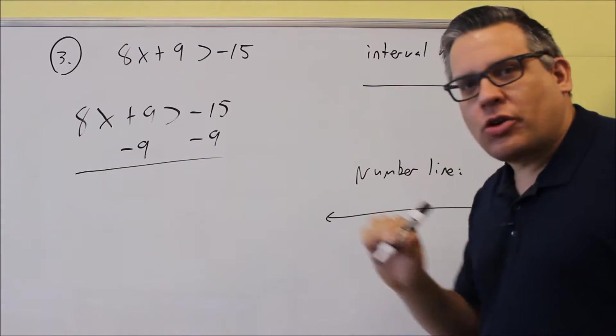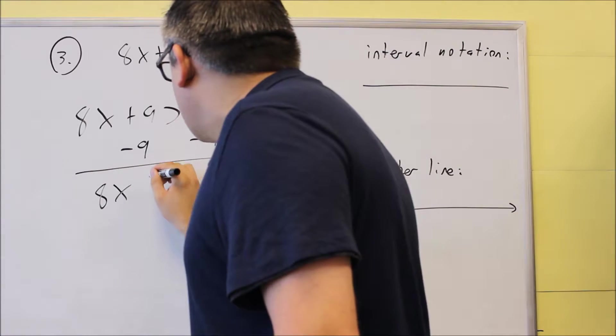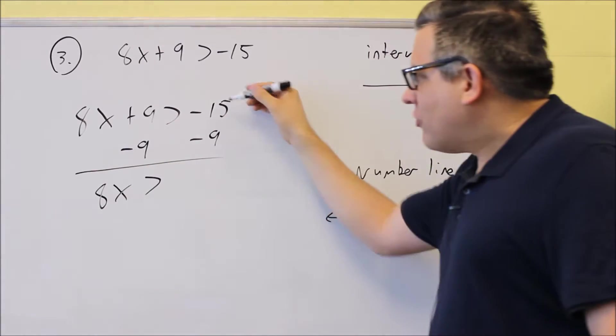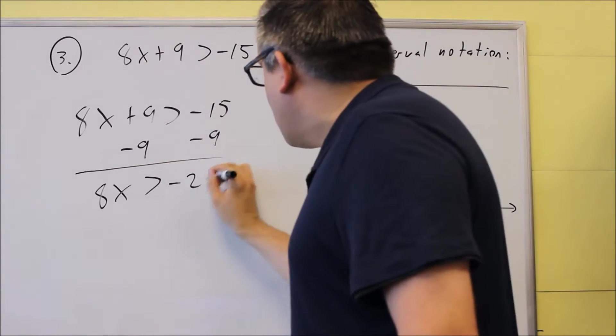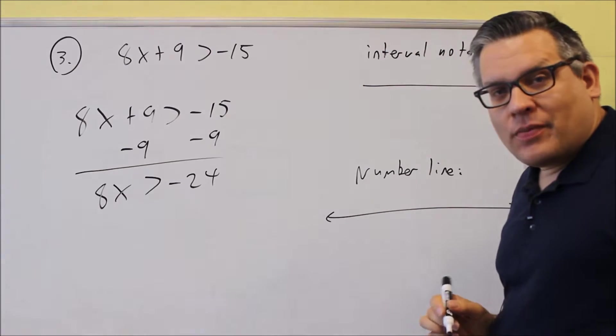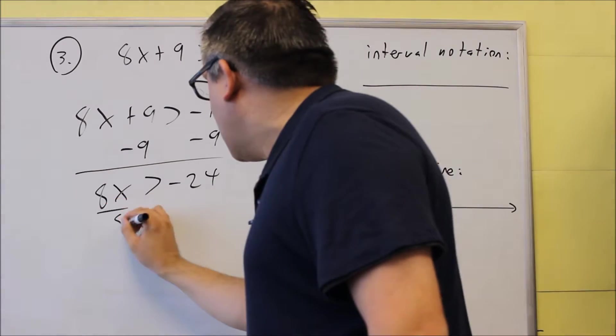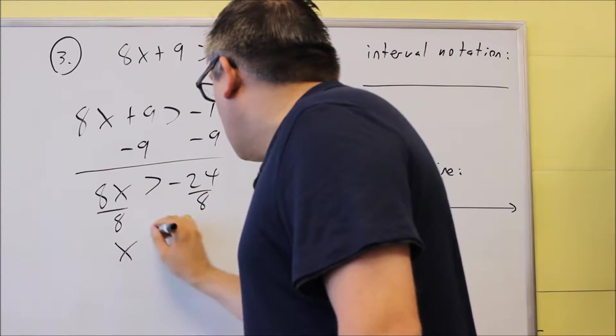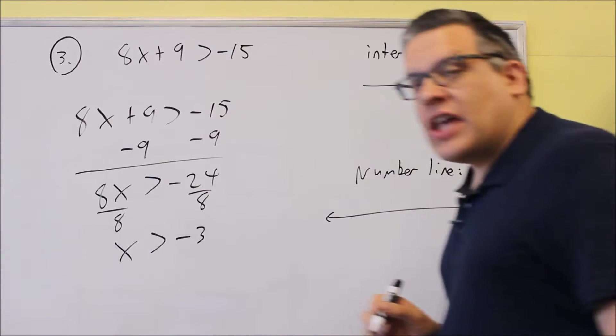If you're adding or subtracting with negative numbers, that does not change the sign. Okay, so this one, we're not changing the sign. We're going to leave that 8x greater than negative 15 minus 9. That gives you negative 24. Then we're just going to divide both sides by 8, and we get x is greater than negative 3.